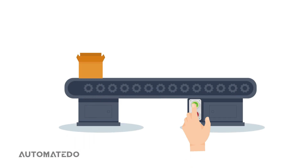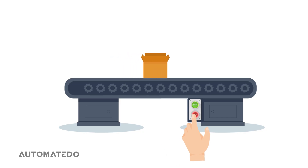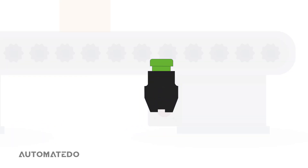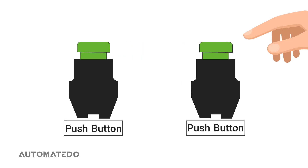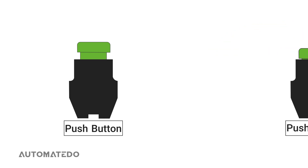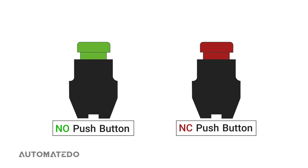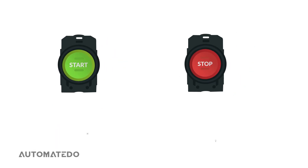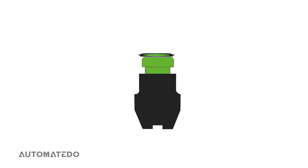Ever wondered how a simple push of a button controls machines, lights, or even entire systems? If you're learning electrical systems, this is something you must understand. In this video, you will learn what a push button is and get familiar with two distinct modes of push button functions — on and off. You will understand different types of push buttons, known as normally open and normally closed switches, their symbols and figures, and how to wire them to a circuit to control the system. Let's get started.